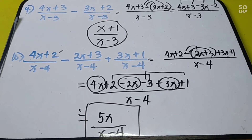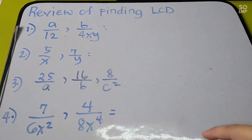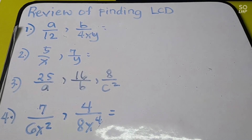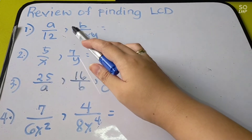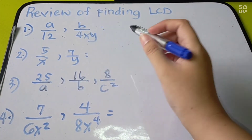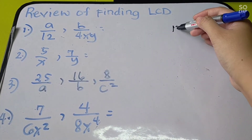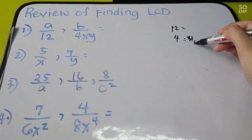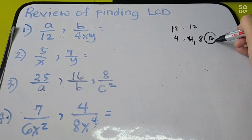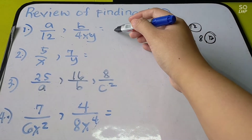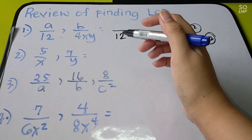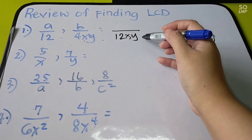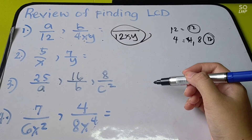Now let us move to dissimilar rational expressions. First, a short review about finding the LCD — the least common denominator. For example, your denominators are 12 and 4xy. Find the LCM of 12 and 4: multiples of 4 are 4, 8, 12 — they match at 12. Then include the variables x and y since they have no common. So the LCD is 12xy.